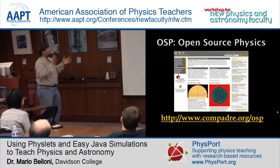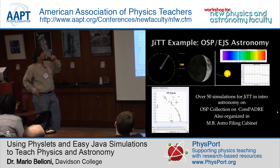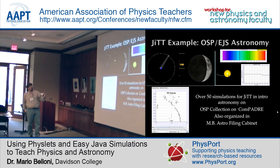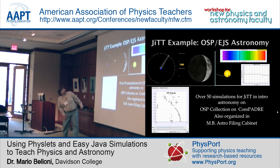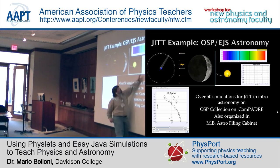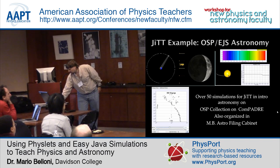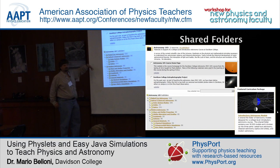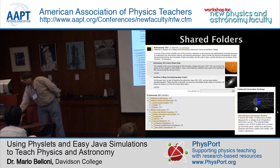We also use Easy Java Simulations and have written at least 50 simulations for just-in-time teaching and other exercises for introductory physics. Here's one of an HR diagram, one showing exoplanet transits, and one for radial velocity — we have both. There are over 50 in a filing cabinet on Compadre, organized by the way I teach the course: naked eye astronomy, classical astronomy, and then modern astronomy.